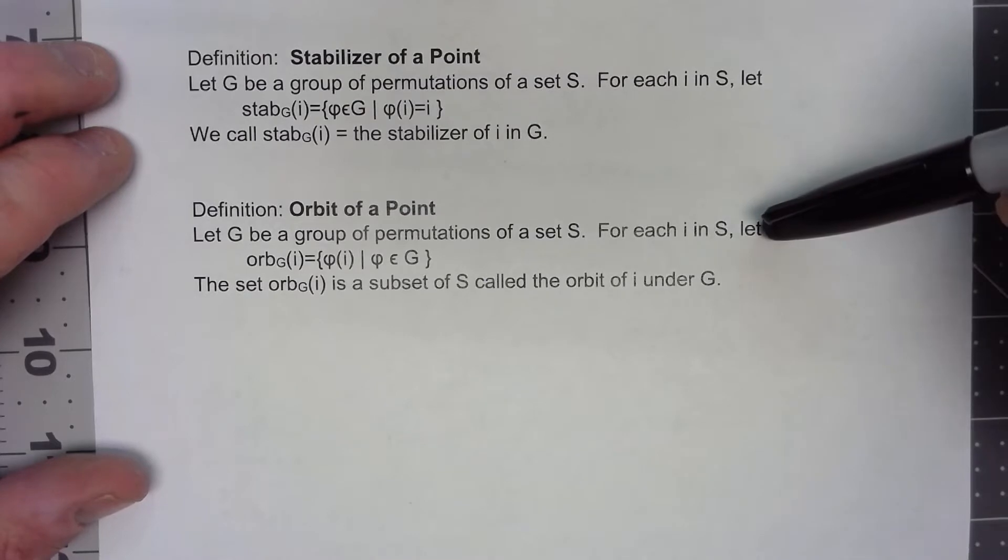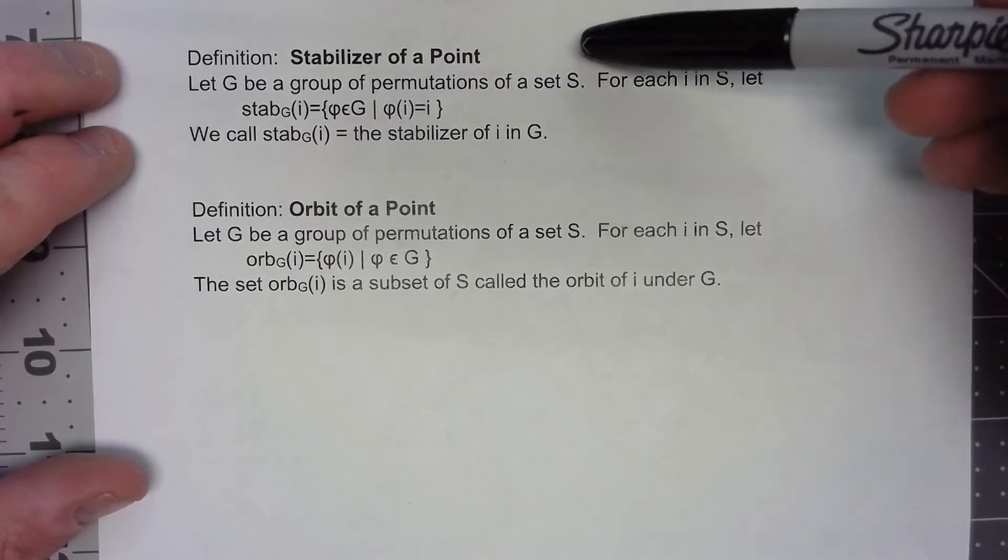Let's look at two more definitions here. The first one is the stabilizer of a point.